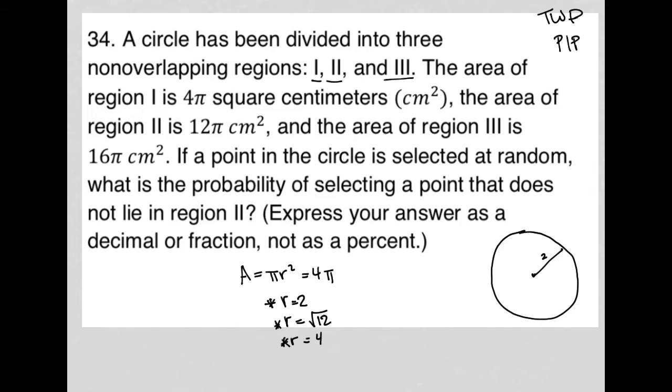I know I have three regions. I'm getting three separate radii based upon the areas of these regions. If a point in the circle is selected at random, what is the probability of selecting a point that does not lie in region two?